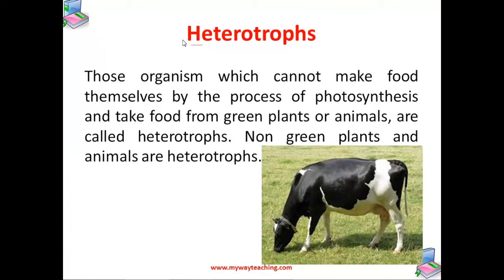Now let us talk about the second mode of nutrition, that is heterotrophs. Those organisms which cannot make their food themselves by the process of photosynthesis, and take food from green plants or animals, are called heterotrophs. All non-green plants and animals are heterotrophs.